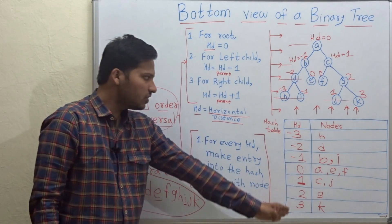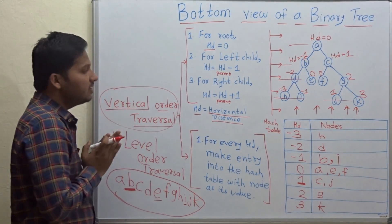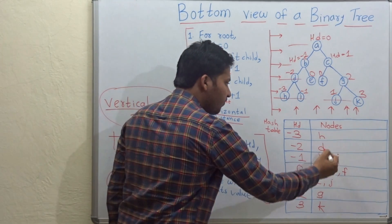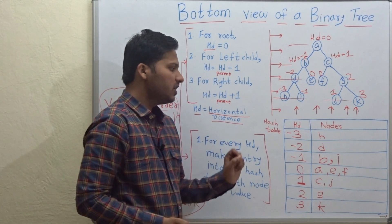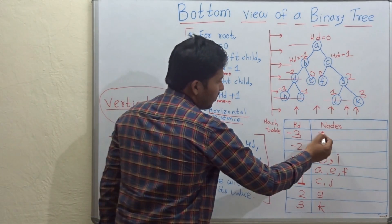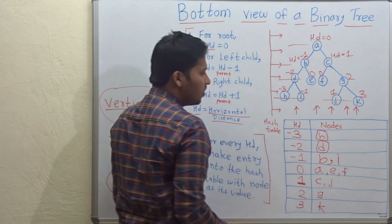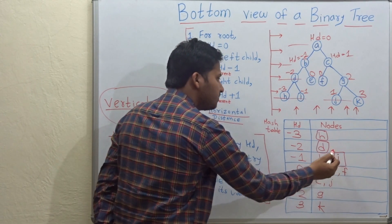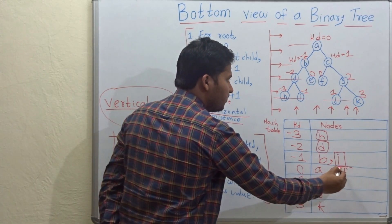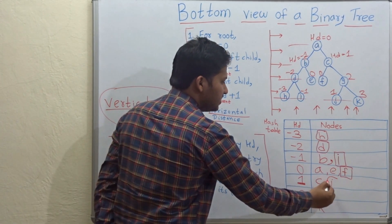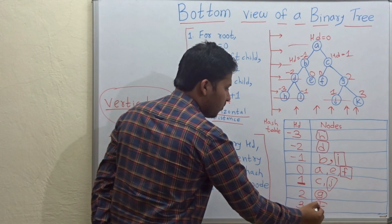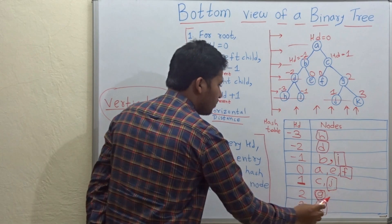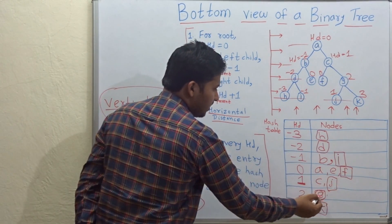Now is the time to write the bottom view of this binary tree. The nodes appearing last for each hd set are going to appear in the bottom view. For minus 3, h is the last node. For minus 2, d. For minus 1, i is the last node (out of b and i). For hd 0, f is the last node (out of a, e, f). For hd 1, j is the last node. For hd 2, g. And for hd 3, k.